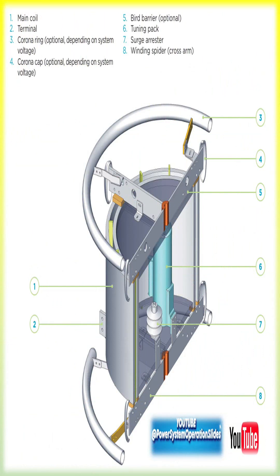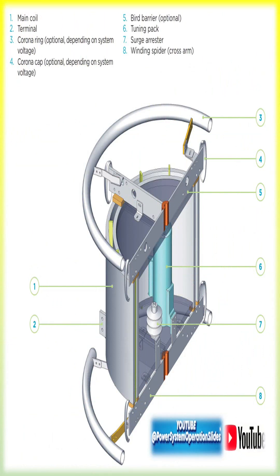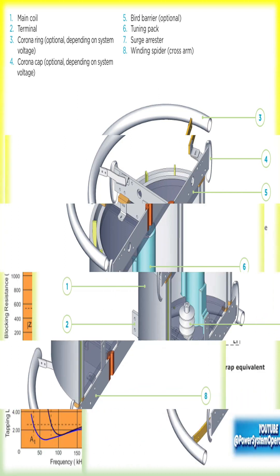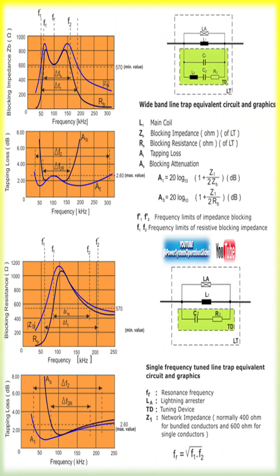To block high-frequency signals, we need opposition in the form of impedance, not resistance, in AC circuits. There are two types of opposition based on frequency: inductive reactance XL, where frequency F is directly proportional to XL. As frequency increases, inductive reactance and opposition also increase.